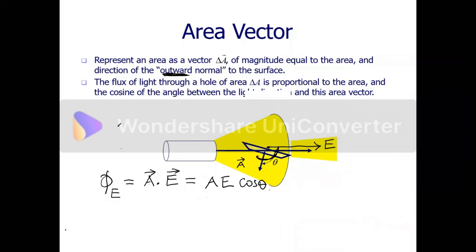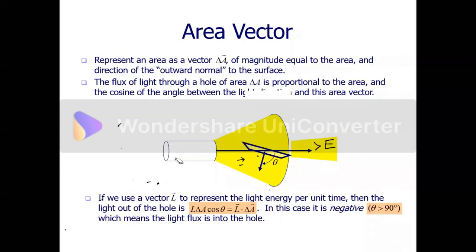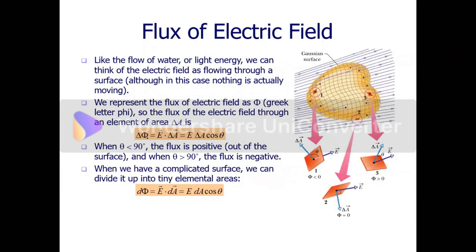We define the electric flux passing through a given area as the dot product of the electric field and the area vector of that particular area. From definition, the dot product is just the magnitude of the electric field, the magnitude of the area vector — which is just the area itself — and the cosine of the angle between the two vectors. Pay particular attention to this diagram. Imagine this is an enclosed, closed surface with a volume inside — a hollow object.